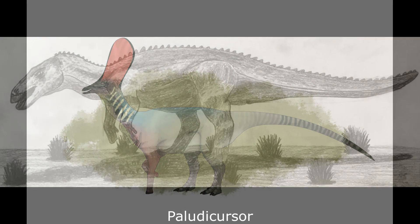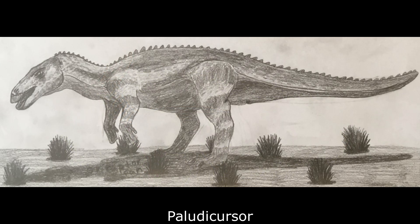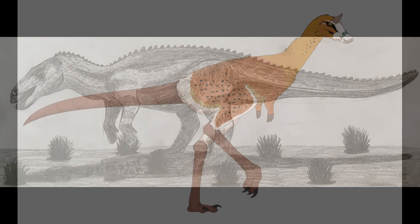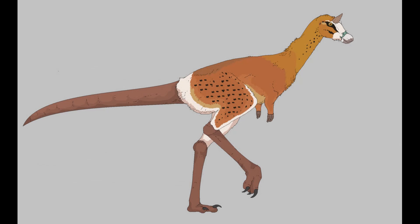Alongside them lived a much smaller family of more basal hadrosauroids, typified by the 3.5-metre Palludicursor. This was an obligate bipedal cursorial herbivore, and one of the smallest hadrosauroids that ever lived. The animal inhabited a niche similar to that taken by the Ziphosaurids of Eurasia and the Presidioseratids of North America.